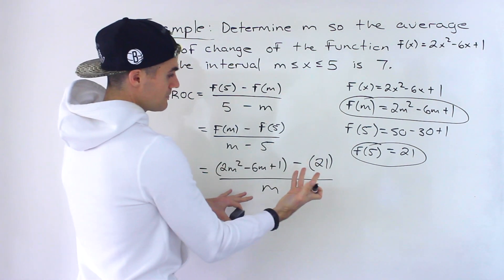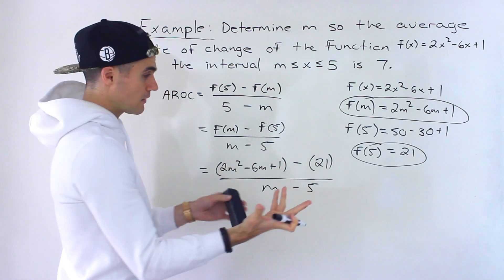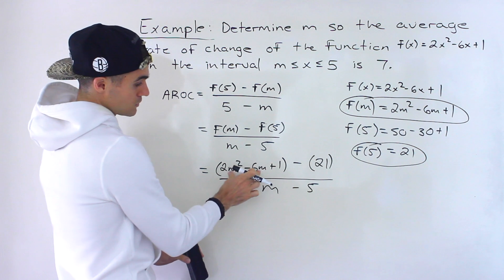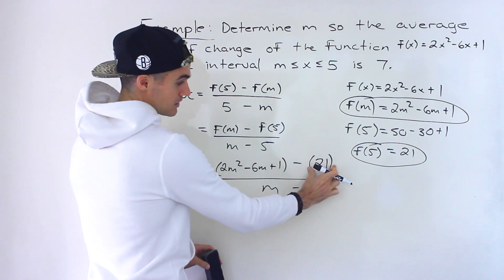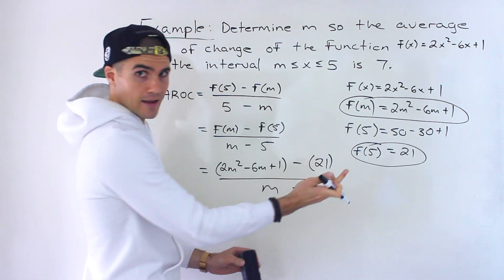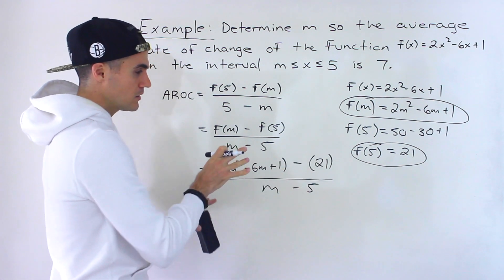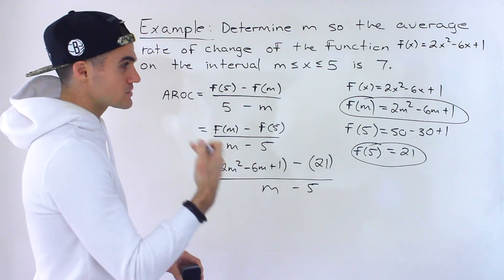Because if we switch these up, which you can do, by the way, you should get the same answer. We could put the 21 minus this expression here, but then we have to distribute the negative inside the bracket. So there's a little bit more to take into account.